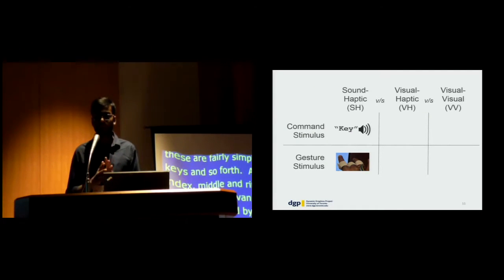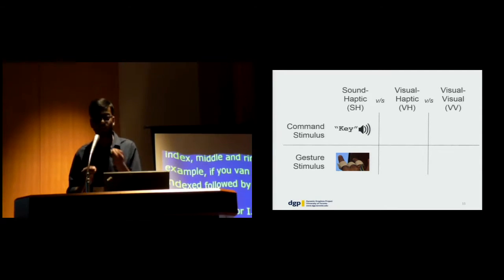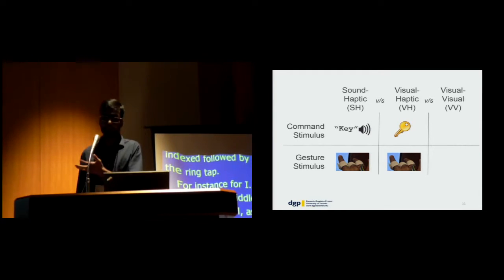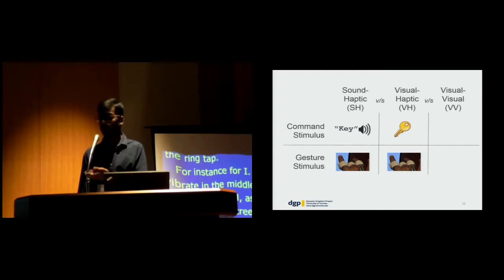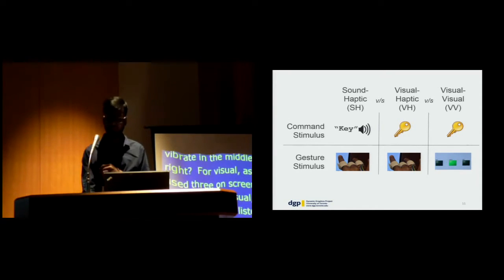Three conditions: sound haptic, visual haptic, visual-visual. In sound haptic, the user listens to the command and feels the gesture through the vibrations. Visual haptic: user sees the icon and feels the vibrations. Visual-visual sees the icon and sees the indicators. These are three conditions that we compare.